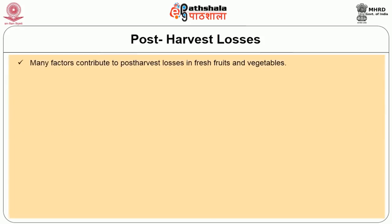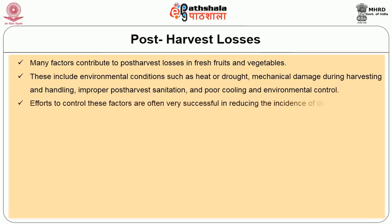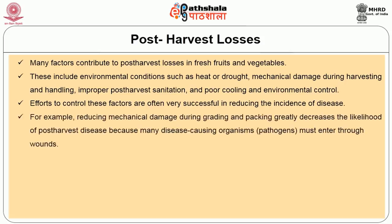Many factors contribute to post-harvest losses in fresh fruits and vegetables. These include environmental conditions such as heat or drought, mechanical damage during harvesting and handling, improper post-harvest sanitation, and poor cooling and environmental control. Efforts to control these factors are often very successful in reducing the incidence of diseases. For example, reducing mechanical damage during grading and packing greatly decreases the likelihood of post-harvest disease because many disease-causing organisms like pathogens must enter through wounds.